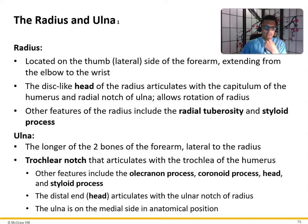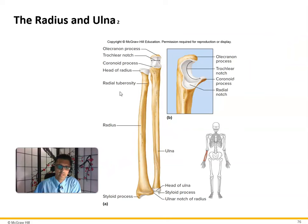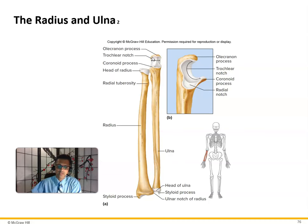The trochlear notch of the ulna articulates with the trochlea of the humerus. Other features include the olecranon process, coronoid process, head, and styloid process. The distal head of the ulna articulates with the ulnar notch of the radius. Looking at the diagram: the radius is lateral, the ulna is medial. Here's the head of the radius, the olecranon process — the bump at the elbow — the trochlear notch where the humerus fits, the radial tuberosity where the biceps tendon attaches, and the styloid processes of both the radius and ulna.